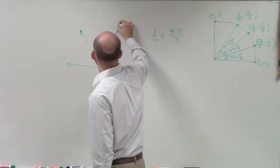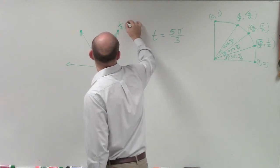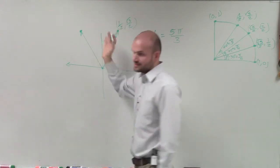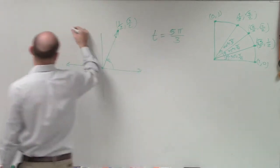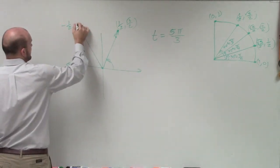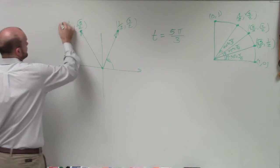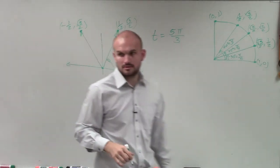So if this point is 1 half comma square root of 3 over 2, if I reflect it over the y-axis, now it's negative 1 half comma square root of 3 over 2.